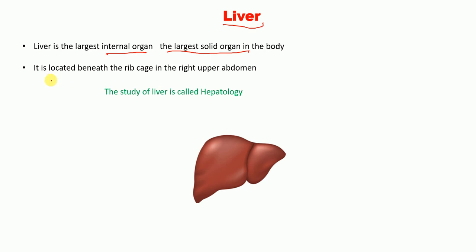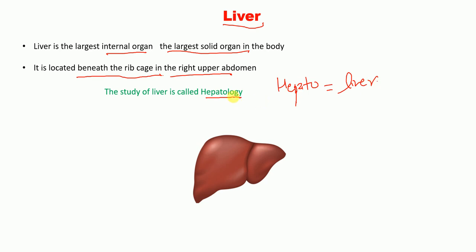The liver is located beneath the rib cage in the right upper abdomen. The study of the liver is called hepatology. Whenever you see the word 'hepato,' it means liver, and '-logy' means the study of. So hepatology is the study of the liver.